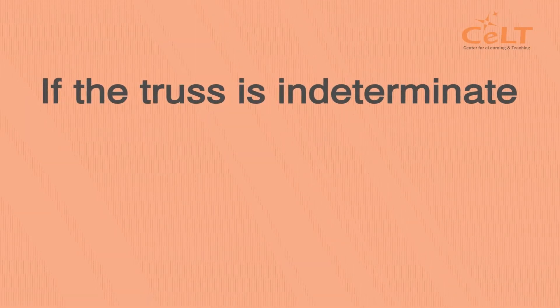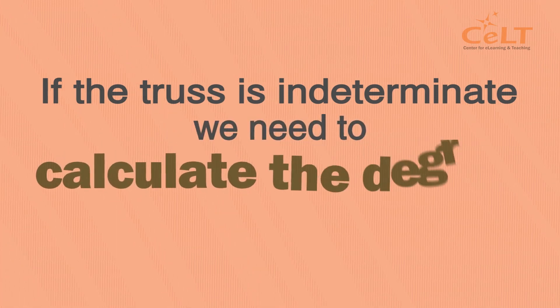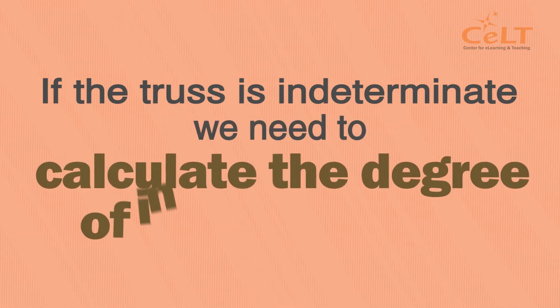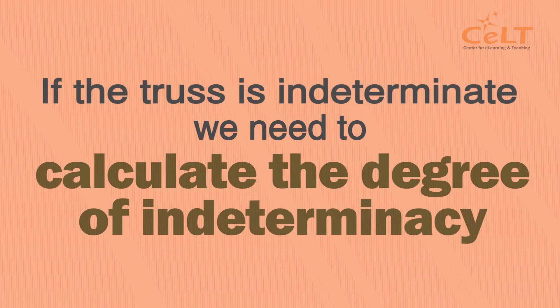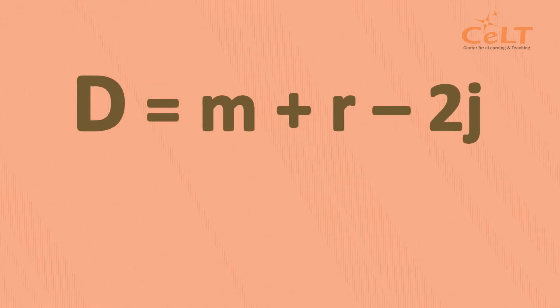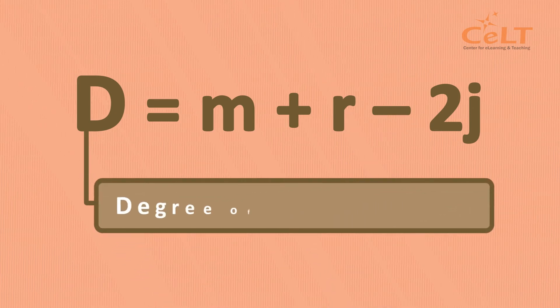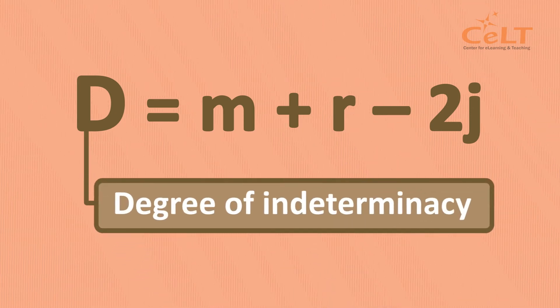If the truss is indeterminate, we need to calculate the degree of indeterminacy using the formula D equals to M plus R minus 2J, where D is the degree of indeterminacy.